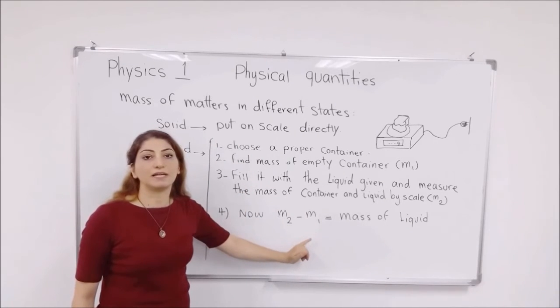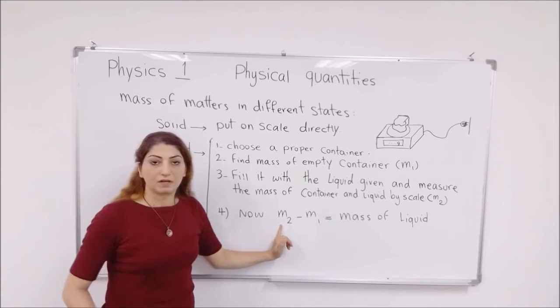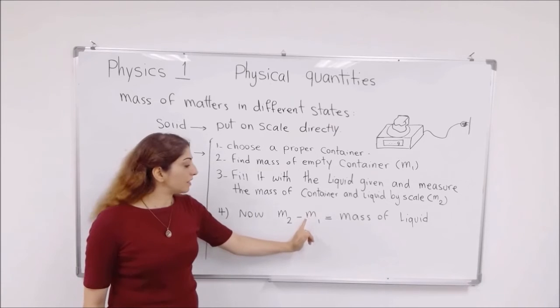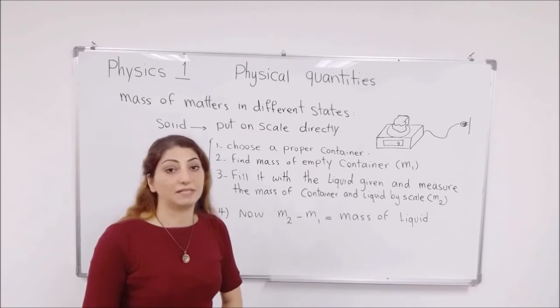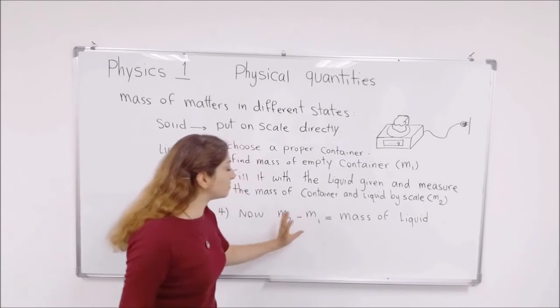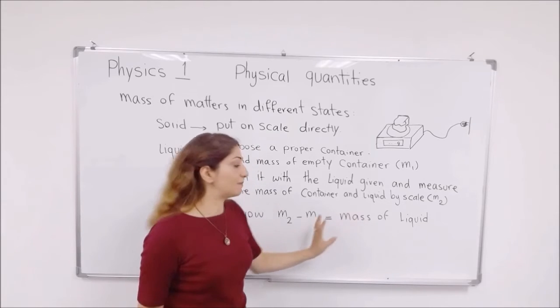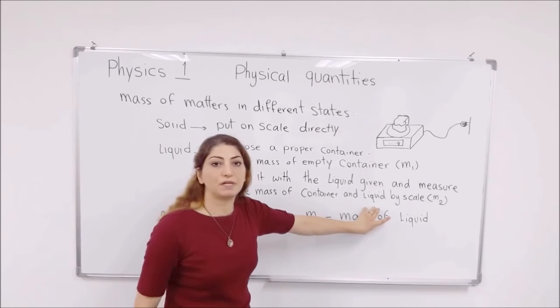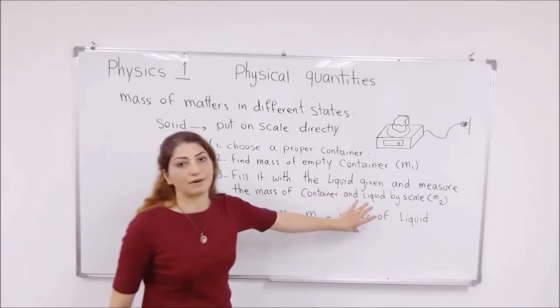Now, what you have to do at the next step is to deduct the masses from each other. The second reading from the first reading of the mass, which is the mass of the container and the liquid together, should be deducted. You have to minus the mass of the cup. So, what you have here, M2 minus M1 is the mass of the liquid alone, which is in grams.